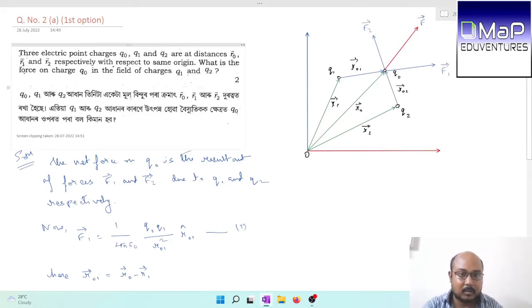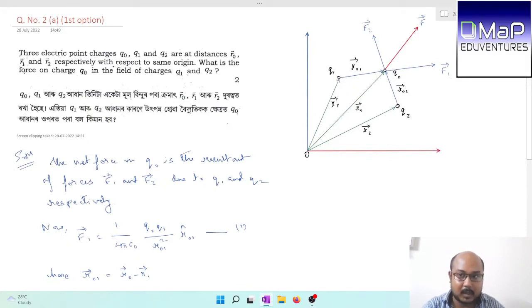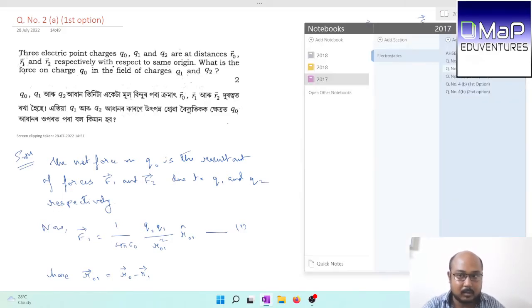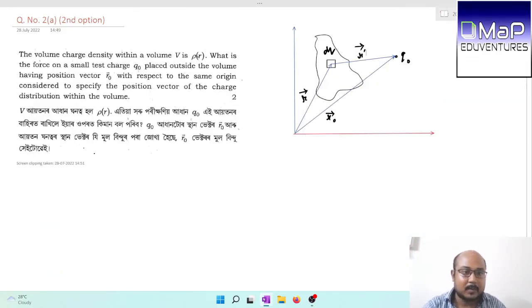The diagram is mandatory because the derivation is based on the diagram. Whenever you encounter such questions, always remember that the diagram is an important factor, because based on the diagram we explain the procedure and solution. Now we move on to the second question, question number 2A second option.